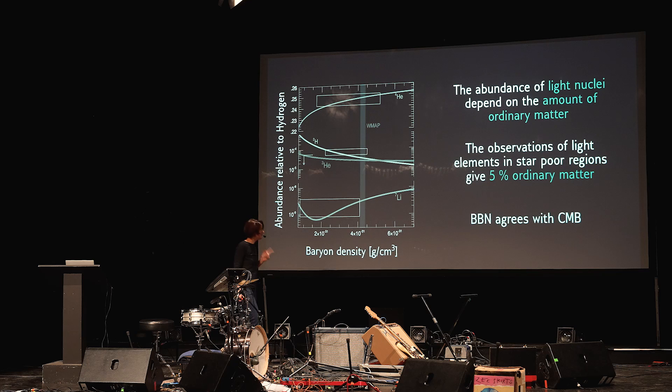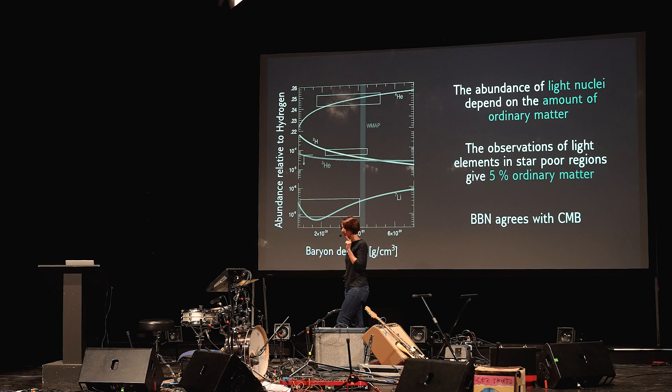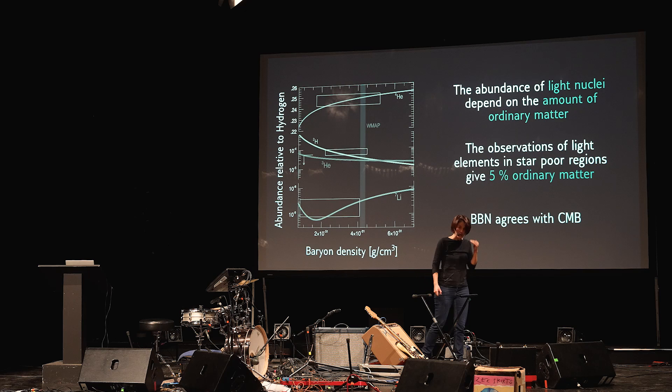Gamow is a funny guy. Like many physicists, they found it fun to write the paper with a third guy just for the name — his name was Bethe. So the paper is called the Alpha Beta Gamma paper: Alpher, Bethe, Gamow. In this paper, they put the basis of the idea that you could actually produce nuclei in the early universe.